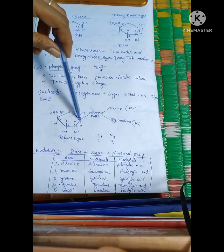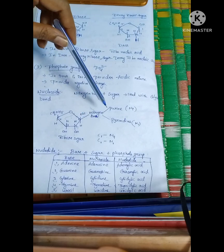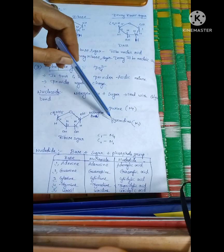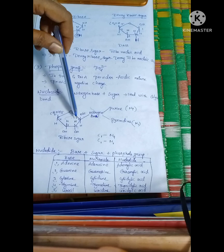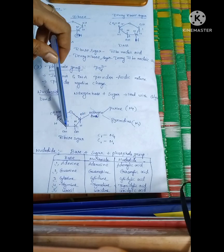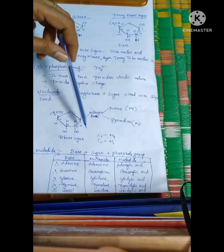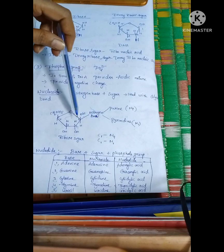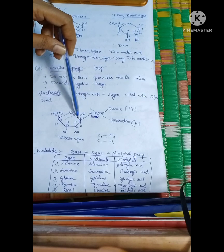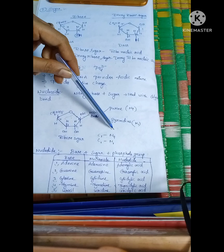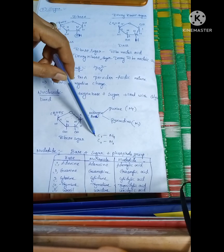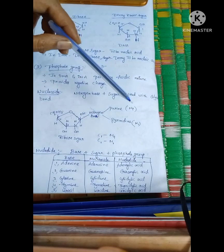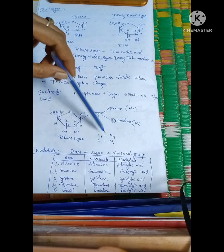Purines are attached to the ribose sugar at the N9 position. If it is ribose sugar, it may be RNA. The glycosidic linkage is attached to the first carbon. For pyrimidines, attachment is at the N1 position.